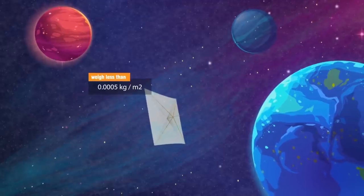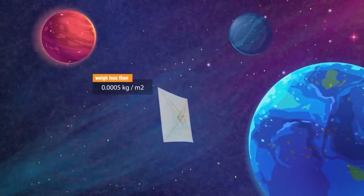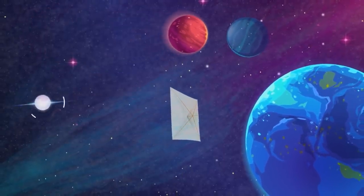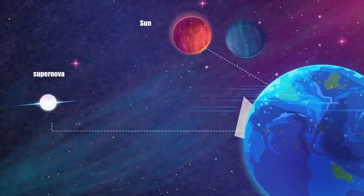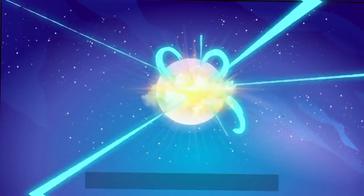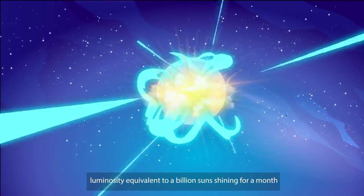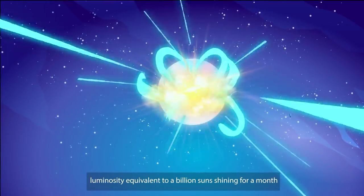A light sail weighing less than half a gram per square meter can reach the speed of light even if it's a hundred times farther away from a supernova than the Earth is from the Sun. This is because a typical supernova has a luminosity equivalent to a billion suns shining for a month.